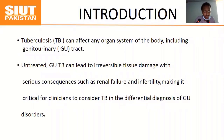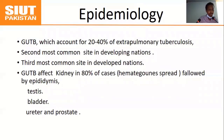First, the introduction. TB can affect any organ of the body, including the genitourinary system. Untreated genitourinary TB can lead to irreversible tissue damage with serious consequences such as renal failure and infertility, making diagnosis very difficult and often late. GUTB accounts for 20 to 40 percent of extrapulmonary tuberculosis — the second most common site in developing nations. It can affect 80 percent of the kidney, leading to hematogenous spread. The second most commonly affected organ is the epididymis, then the testes, bladder, ureter, and prostate.